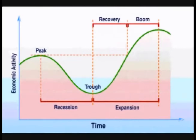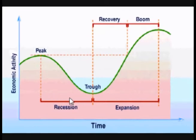Cyclical unemployment, also known as demand-deficient unemployment, comes from fluctuations in the business cycle. The business cycle generally has four parts: growth, prosperity, decline, and recession. A recession will always be followed by expansion, and expansion will always be followed by recession. The full loop of going from recession to growth and back to recession again is called the business cycle. Cyclical unemployment comes from the periods of decline and recession in the business cycle.